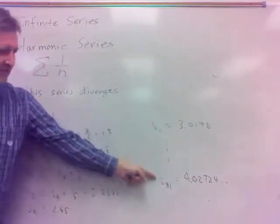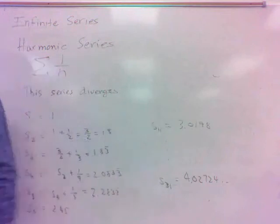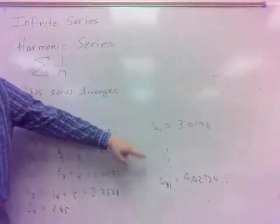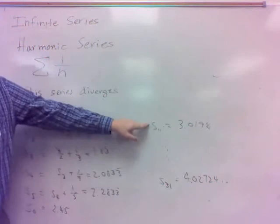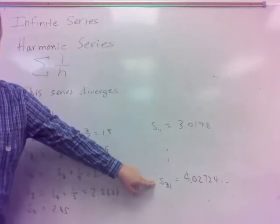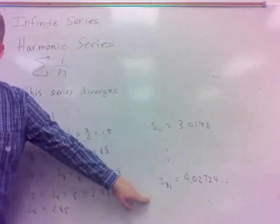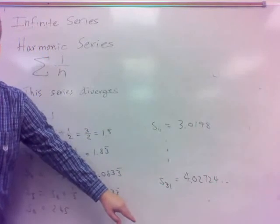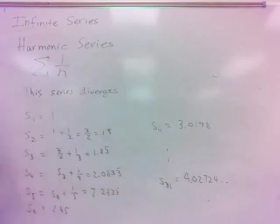I hit 2 right here — I see why I picked 11 and 31, because that's where it crosses over 3, and this is where it crosses over 4. Guess what? It's going to cross over 5 at some point, it's going to cross over 6 at some point. There's not going to be a sum for the whole entire series.